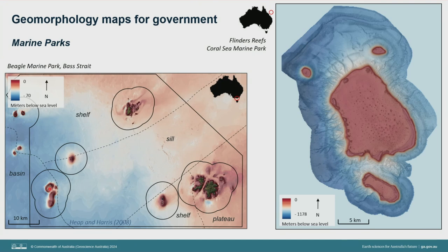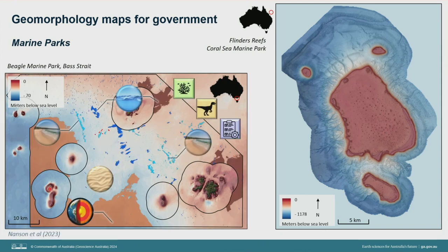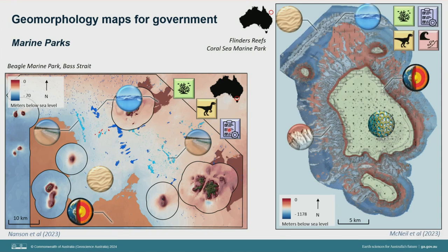I'll give a couple of examples of how we've been using this method to provide advice to government and stakeholders. In the Bass Strait Beagle Marine Park, we've mapped the distribution of different coastal and marine geomorphologies, helping park managers understand habitat distribution, reconstruct paleo environments, and improve their understanding of ecosystem distribution within and outside the park. Similarly, up on the Flinders Reefs, we've produced a geomorphology map in two parts — the morphology and shape of features, and then the classification of those features — providing insights into habitat distribution, instability, and paleo-environmental conditions to help support park managers.